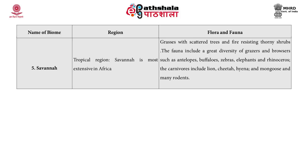Fifth, the savanna biome: found in tropical regions; savanna is most extensive in Africa. The grasses are scattered, with trees and fire-resistant thorny shrubs. The fauna includes a great diversity of grazers and browsers such as antelopes, buffaloes, zebras, elephants, and rhinoceros. The carnivores include lions, cheetahs, hyenas, and mongooses and many other rodents.